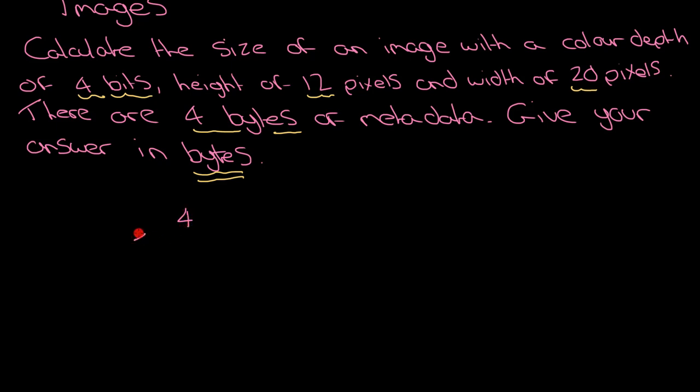How do you unpick this? Color depth of 4, height of 12, and width of 20 pixels. What do we do? Yes, we multiply them all together. So 4 times by 12, that's going to be 48, then times that by 20, and you're going to end up with 960 bits. 960 bits because we're dealing with bits when we're talking about color depth. But we want the answer in bytes and we haven't dealt with the metadata. So how do we convert bits to bytes? Well, we divide it by 8 because there are 8 bits in a byte.